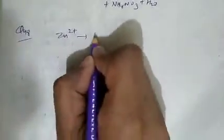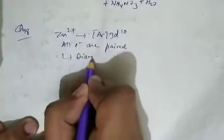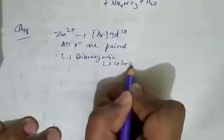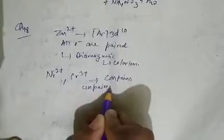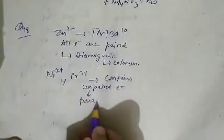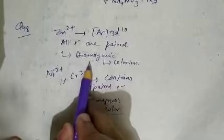Question number 49: out of the given ions, Zn2+ has the configuration argon 3d10, so all electrons are paired, making it diamagnetic, which means colorless. While Ni2+ and Cr3+ contain unpaired electrons, making them paramagnetic, which is responsible for their color. So Zn2+ is colorless while Ni2+ and Cr3+ are colored.